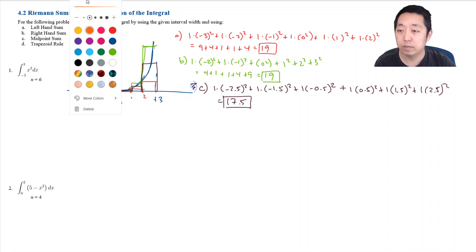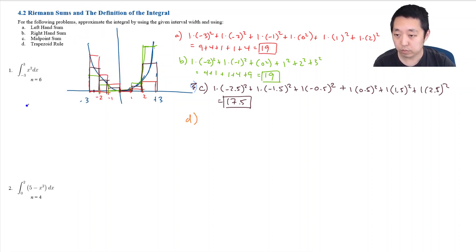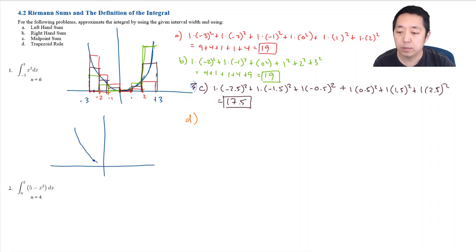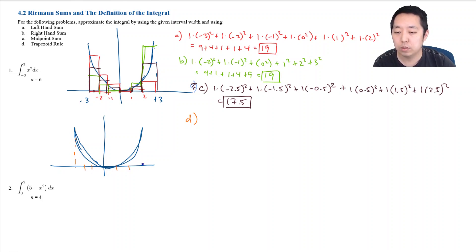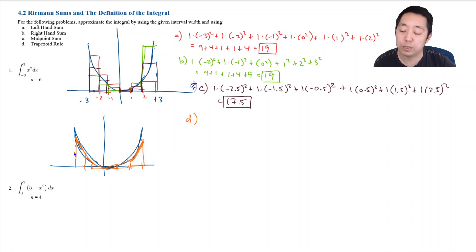For the trapezoid rule, you use both the left and right endpoints. Rather than simple rectangles, I create trapezoids over each sub-interval. I'm adding up the sum of these trapezoids — they're not rectangles anymore.